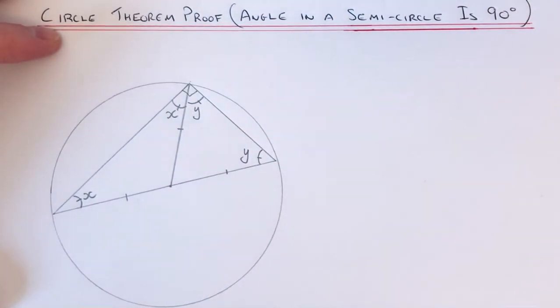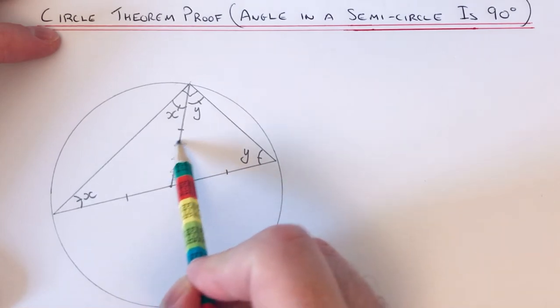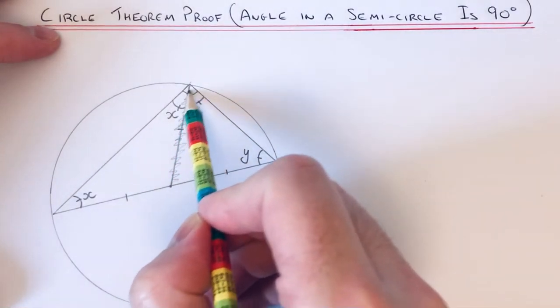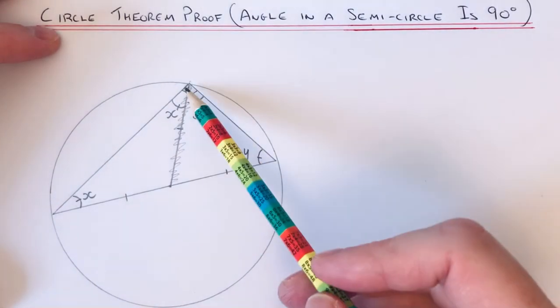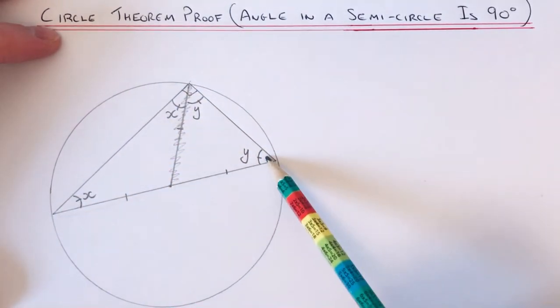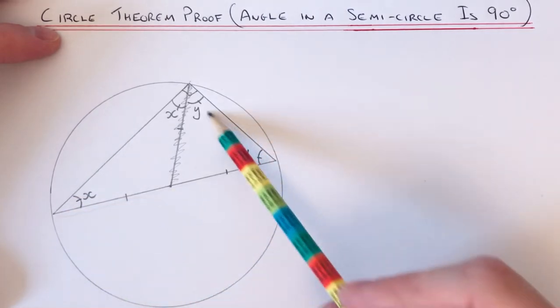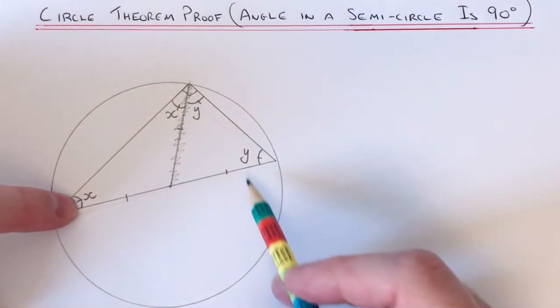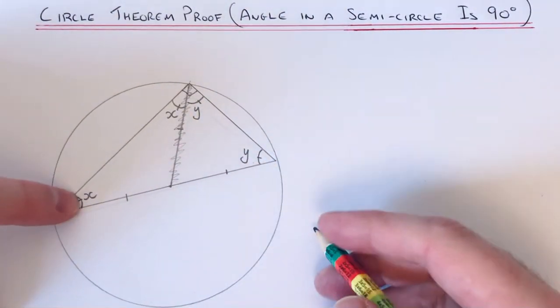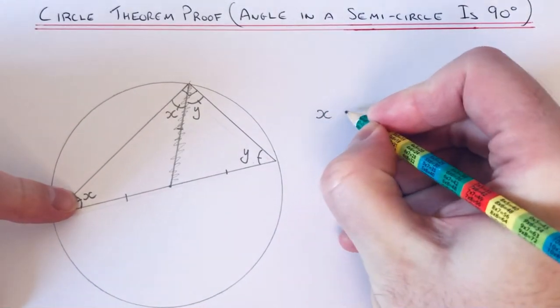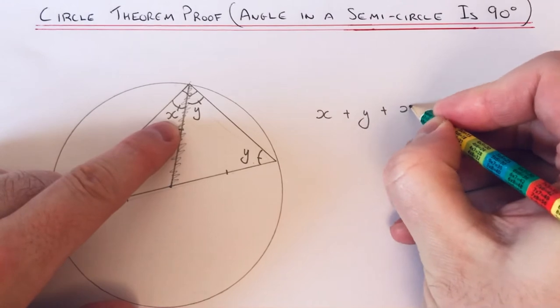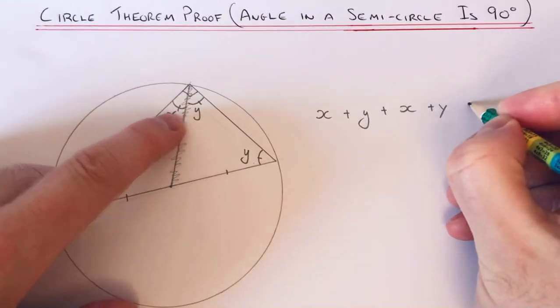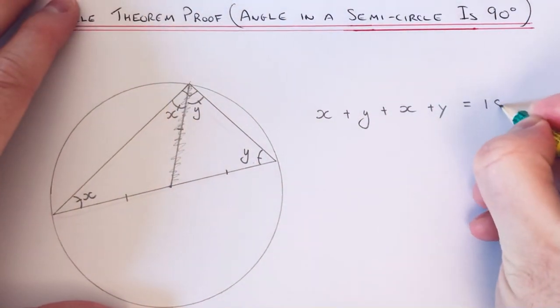Okay, so we're now going to ignore the radius here, and we're going to use the angle fact that angles in a triangle add up to 180 degrees. So we're going to add up these three angles. So let's start with this one here: we've got X plus Y plus X plus Y equals 180 degrees.